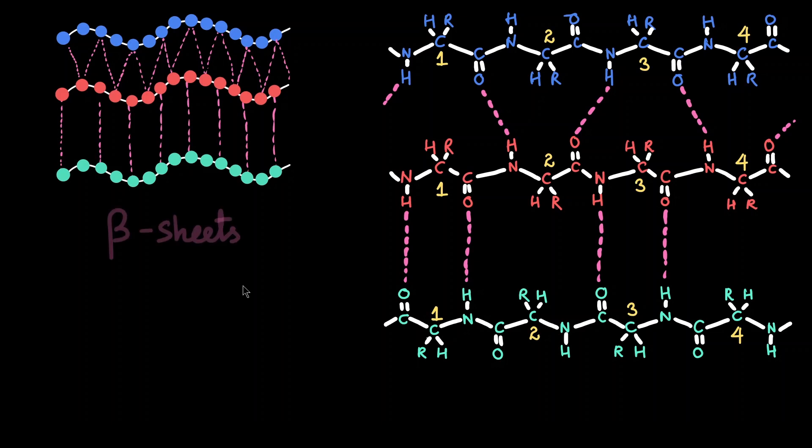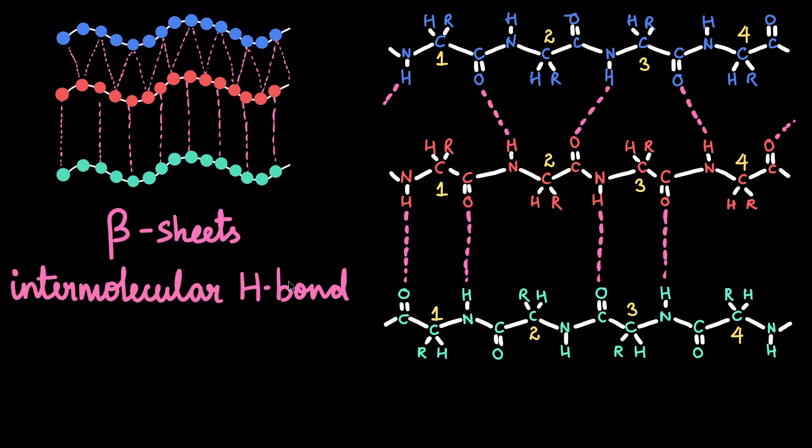Sometimes when multiple polypeptide chains come together, they can also form hydrogen bonding in between them. This interaction gives rise to what is known as the beta sheets or beta pleated sheets, and the hydrogen bonding between them is intermolecular hydrogen bonding. The way the hydrogen bond forms depends upon the orientation of the polypeptide chain with respect to each other. Chain one and chain two—we see that the amine and the carboxy terminal are oriented in the same fashion. This sort of arrangement is called a parallel arrangement.